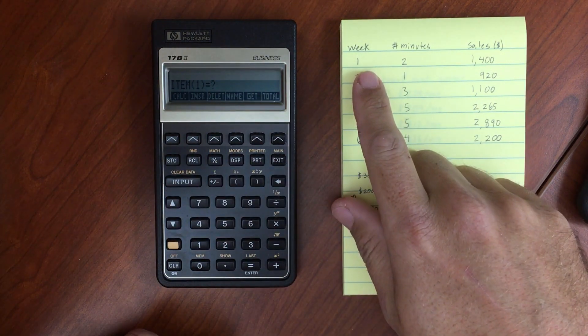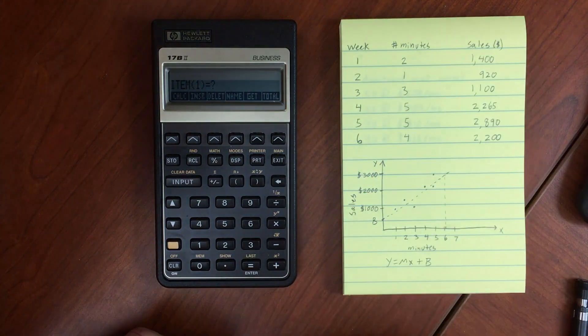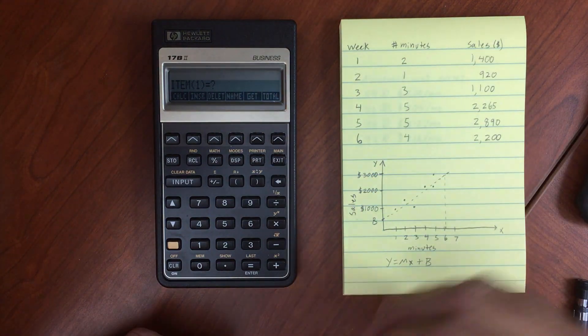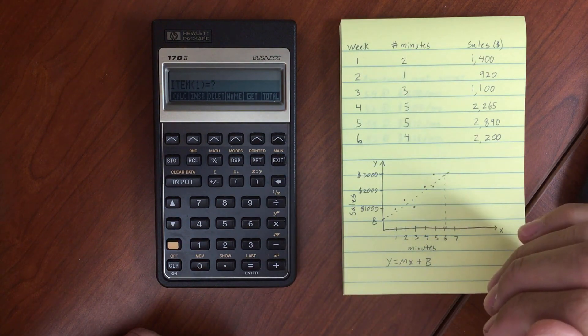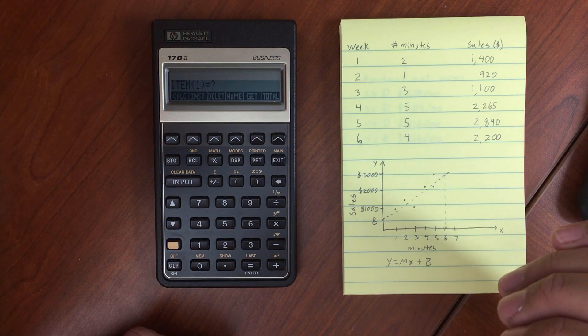So we've got two lists here of minutes and sales. These are for different weeks. So we've collected data, and then we're going to try to use a linear model to predict how many minutes of advertising we need in order to get $3,000 worth of sales.